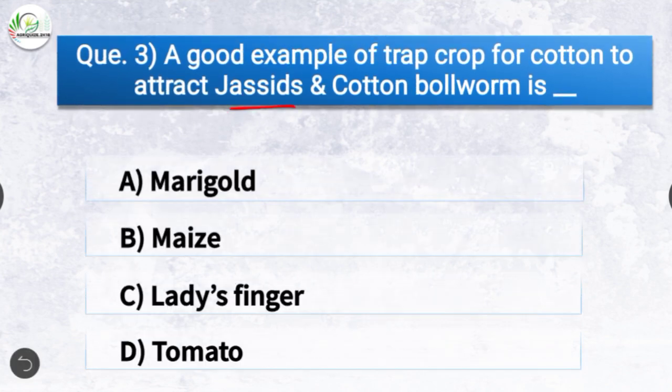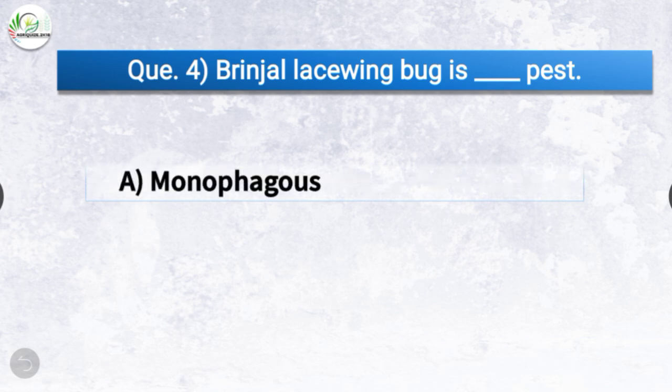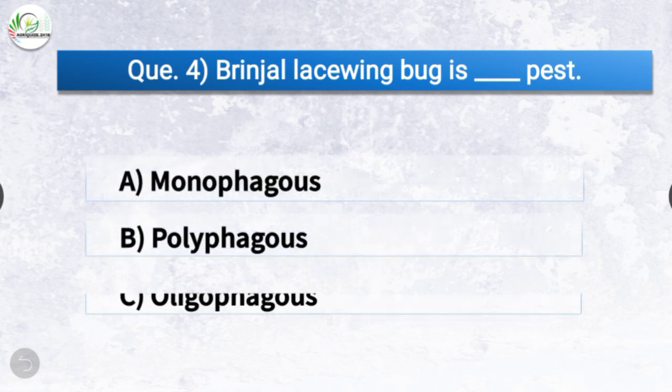Question number three: A good example of a trap crop for cotton to attract jassids and cotton bollworm is dash. The options are marigold, maize, lady's finger, or tomato. The correct answer is option C, lady's finger (okra) — a good example of trap crop for cotton to attract jassids and cotton bollworm is lady's finger.